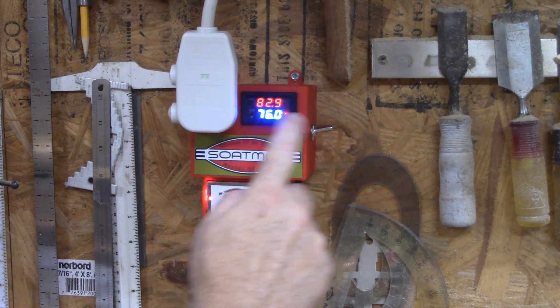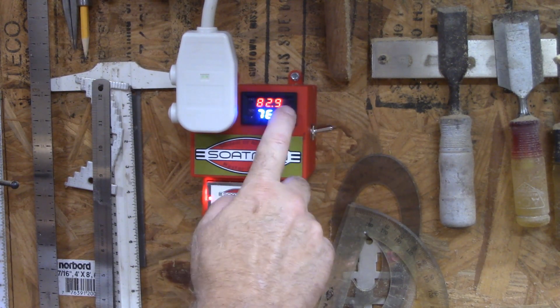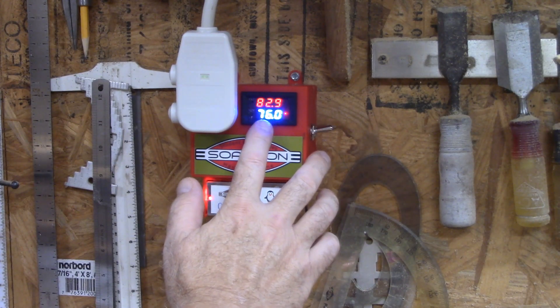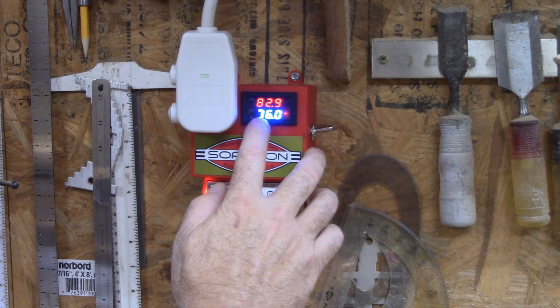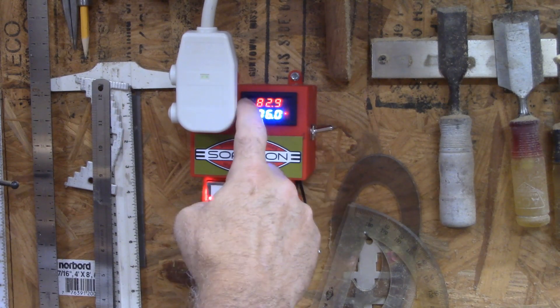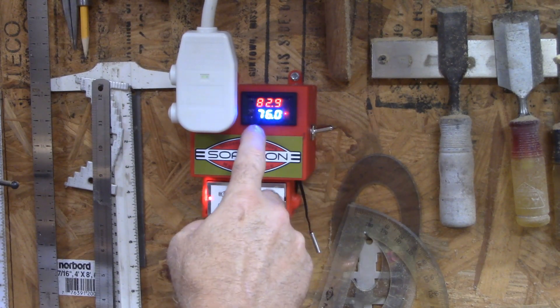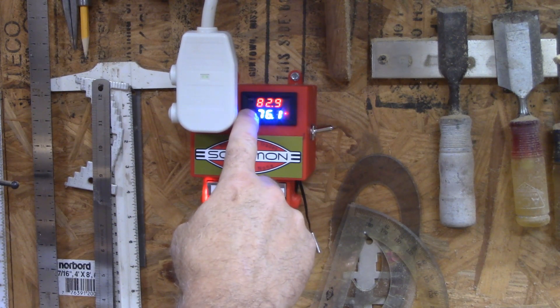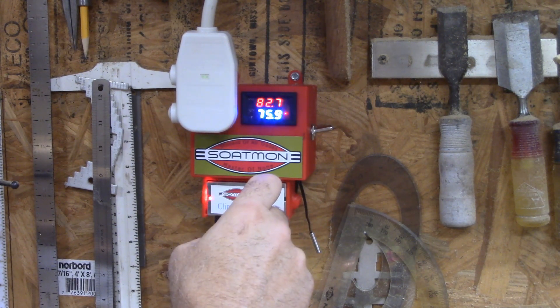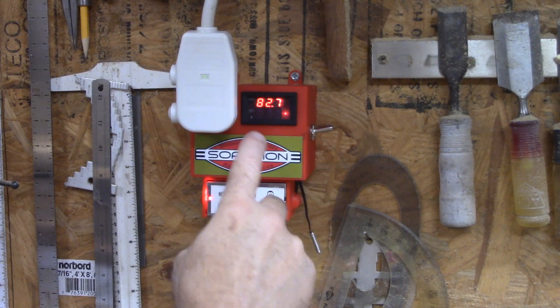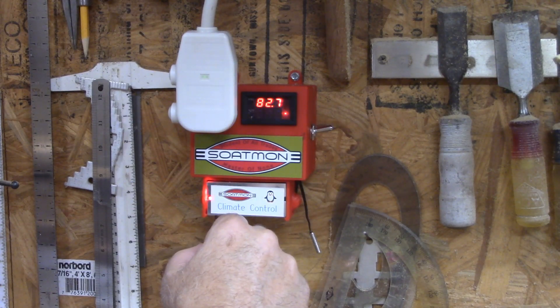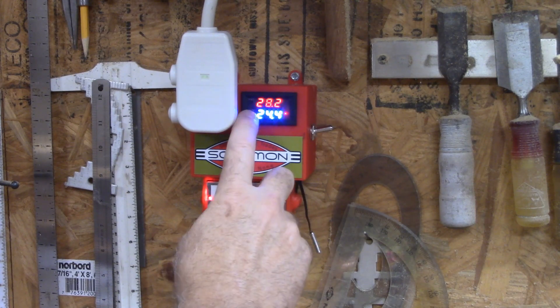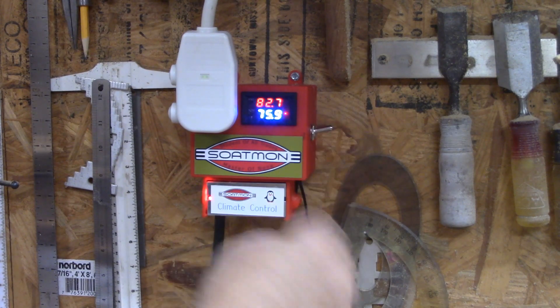You can set your temperature here. This is the temperature that it is: 82.9. I just came in here a little bit ago, so it hasn't gotten it cooled off yet, but this is what it's set to: 76. To set it, you just push the button right there and then it starts blinking, and then you can use this as an up button and this one as a down button. It'll toggle between Celsius and Fahrenheit, so it's very simple.